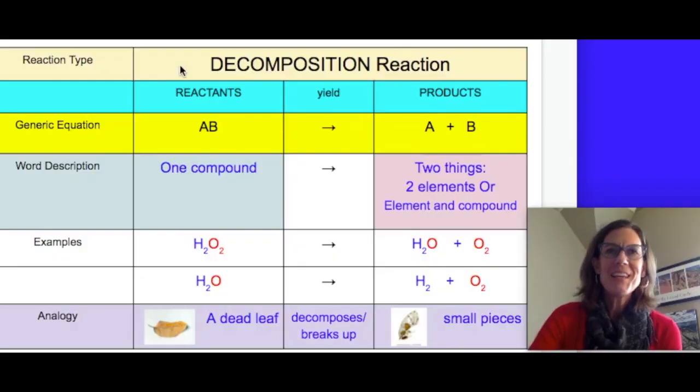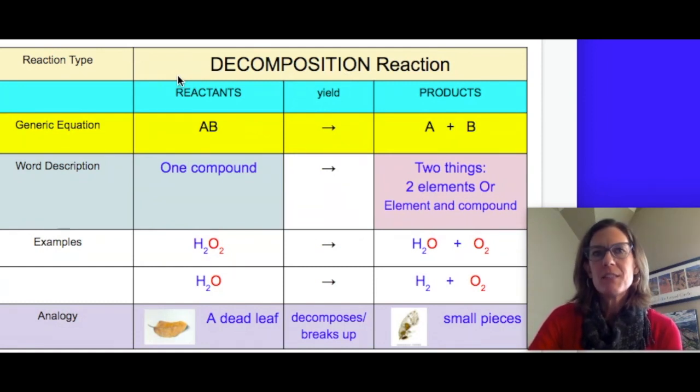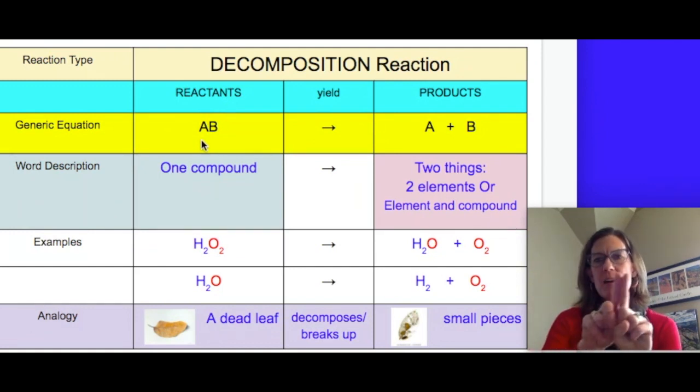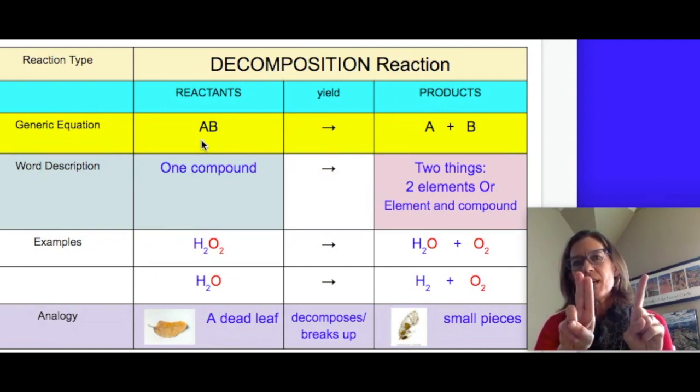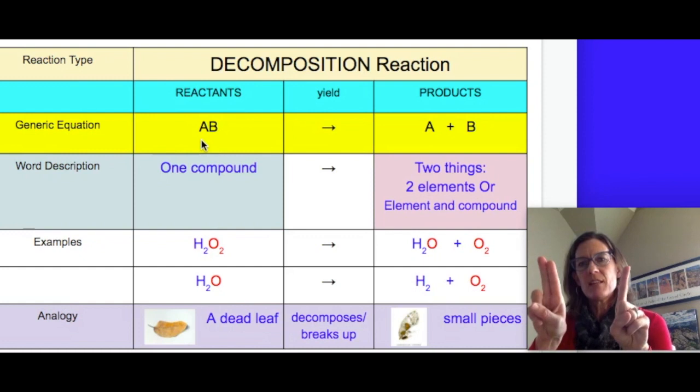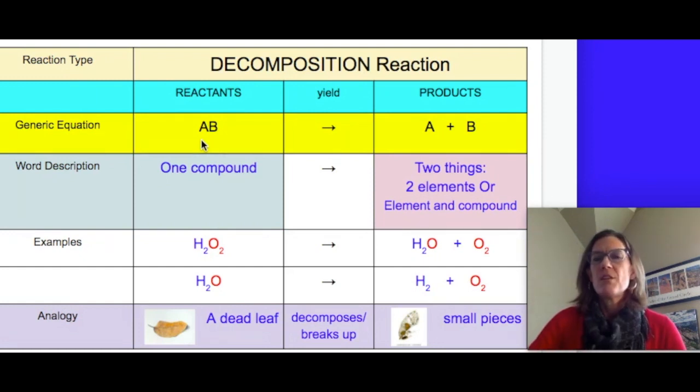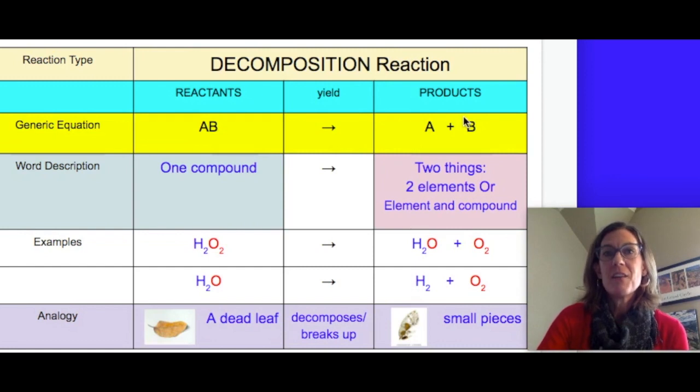The next type of reaction is a decomposition reaction. Say that out loud, decomposition. You've heard that word maybe with rotting food or leaves outside. Decomposing means to break up into smaller pieces. Reactants in a decomposition reaction are always a compound. A compound might have two elements bonded in a ratio, or it could be three or more, and those break down into smaller pieces. So you see in the products, either a compound breaks into two elements, or a compound breaks into an element and a compound, maybe. So there is a plus sign on the product side of our equation here. This is the opposite of the synthesis reaction we just saw.